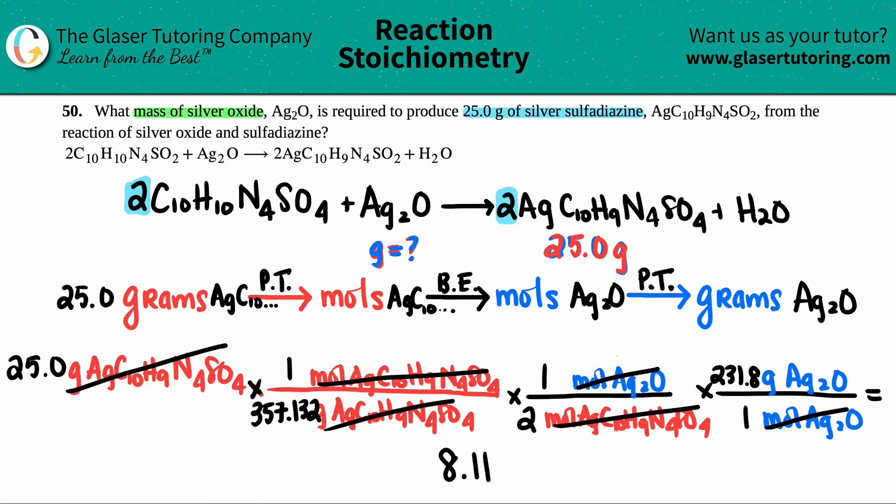Just for professors or teachers who like sig figs, just know with conversions, the number of sig figs that you start with should be the number of sig figs that you ended with. That's why I cut it off at 8.11, and that's the grams of the silver oxide. That is your final answer. Basically what this means is it's like a recipe. If you want to make 25 grams of the silver sulfadiazine, I need to have 8.11 grams of the silver oxide.